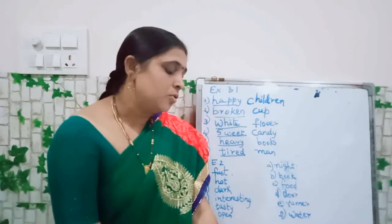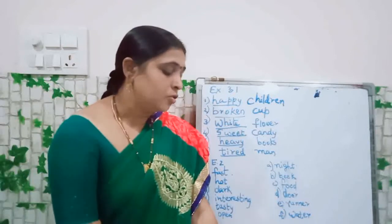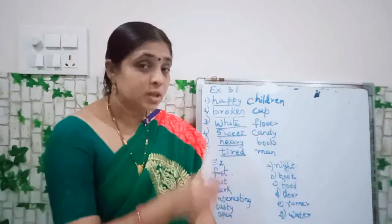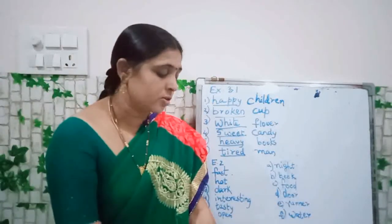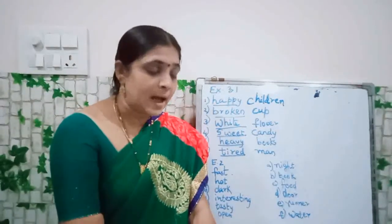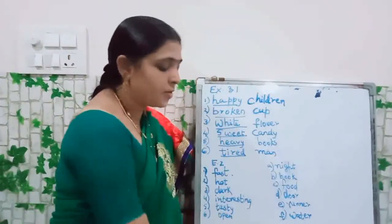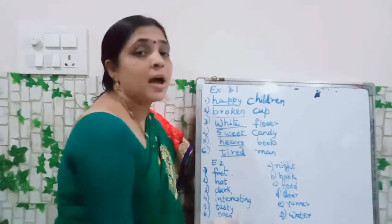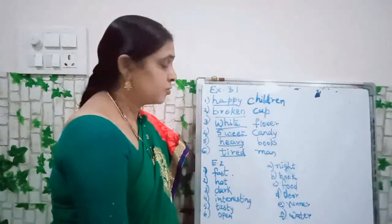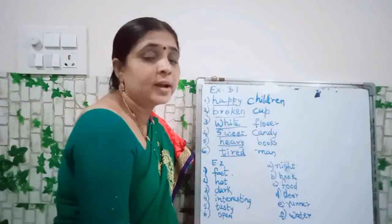Exercise 3.1 — look at the given pictures. Fill in the blanks with adjectives of quality to match the pictures. Choose the adjectives from the words given in the boxes. First one: happy children — how are the children? Happy. Write 'happy.' Next one: the cup is broken — write 'broken cup.' B-R-O-K-E-N. Next: white flower — W-H-I-T-E flower.